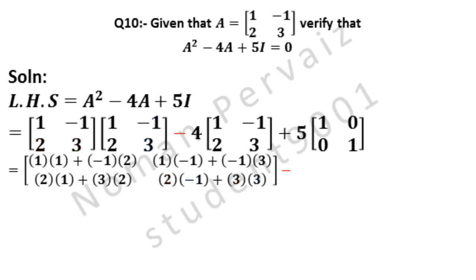Minus is written as it is. Next we will multiply 4 with all the elements present in the matrix. 4 ones are 4. Minus is written as it is. Then 4 ones are 4, 4 twos are 8, 4 threes are 12. Plus is written as it is. Next we will multiply 5 with all the elements present in the matrix.